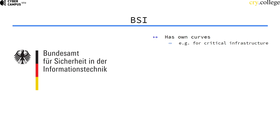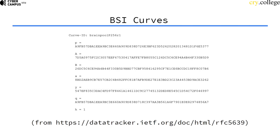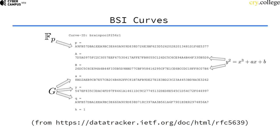This is used in critical infrastructure in Germany. This particular Brainpool curve is called Brainpool P256, with the same security level as NIST P256. In this standard, you can see there's nothing more to it than P for the finite field, the prime number, and A and B for the curve equation.